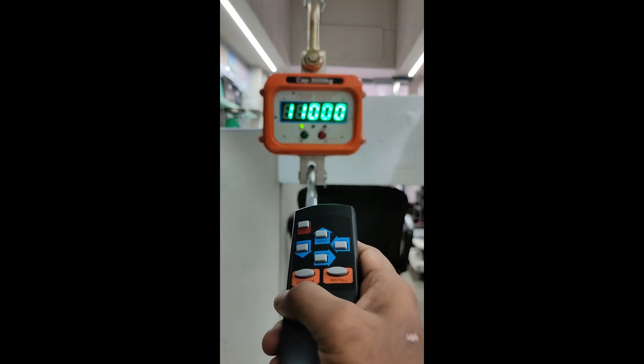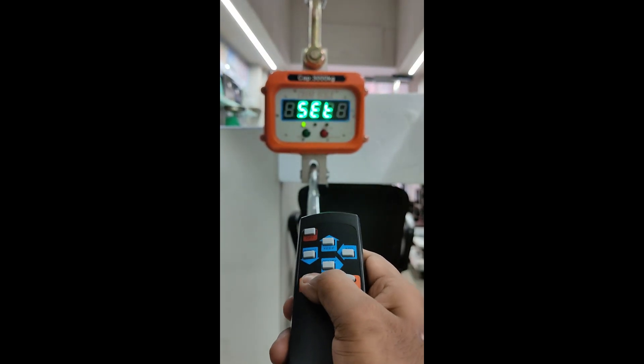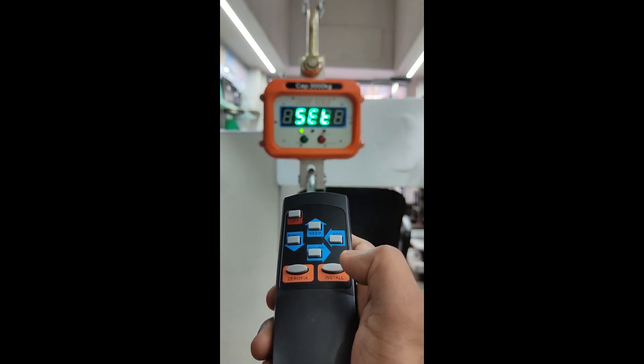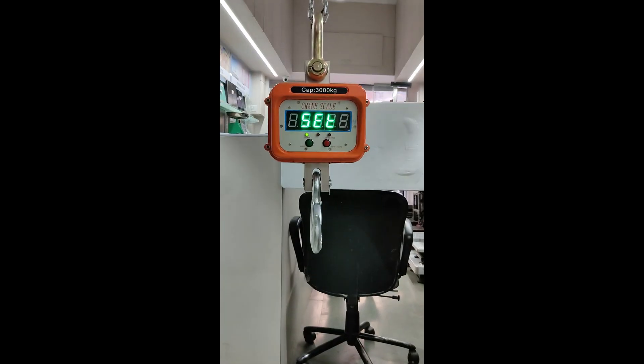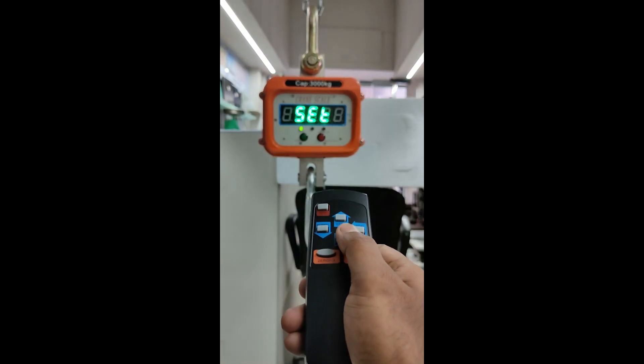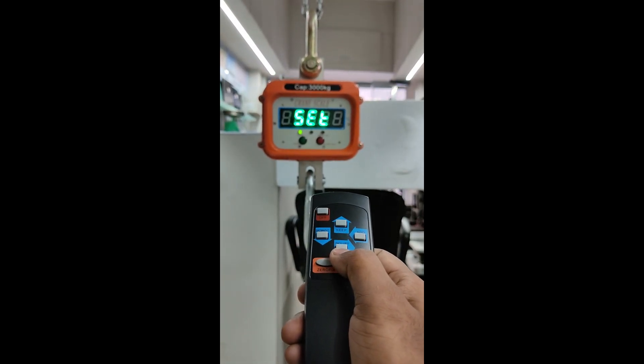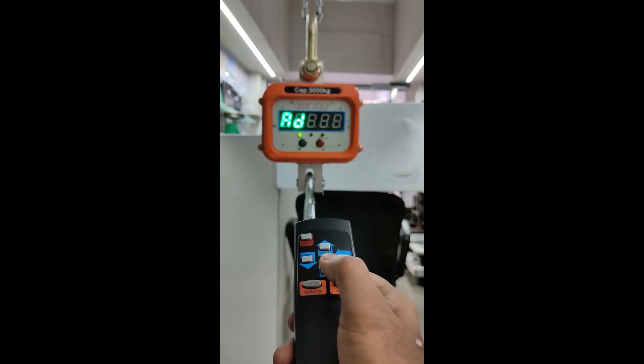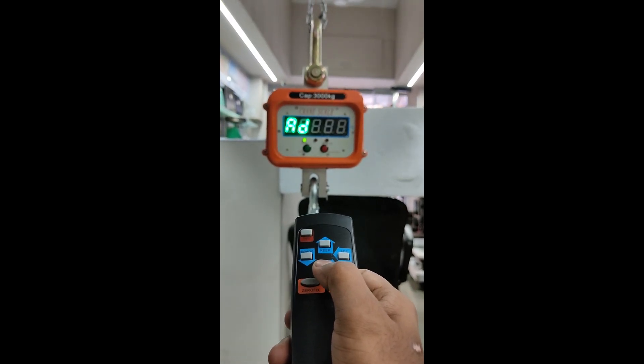After entering the password, press the zero button. The display will show 'set'. To enter calibration, press the down arrow button. The display will show 'add'.